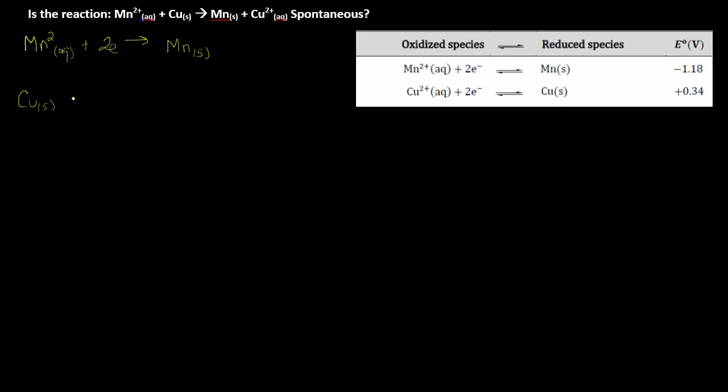What I need to do is split this into its constituent half reactions. Manganese 2+ plus 2 electrons goes to manganese solid. Copper goes to copper 2+ plus 2 electrons.